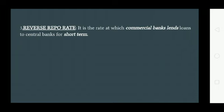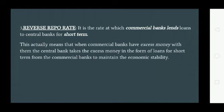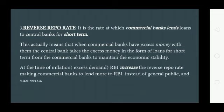The third instrument is reverse repo rate — it is the rate at which commercial banks lend loans to the central bank for the short term. This means that when commercial banks have excess money, the central bank takes the excess money in the form of a loan for the short term from commercial banks to maintain economic stability. At the time of inflation or excess demand, RBI increases the reverse repo rate, making commercial banks lend more to RBI instead of the general public.